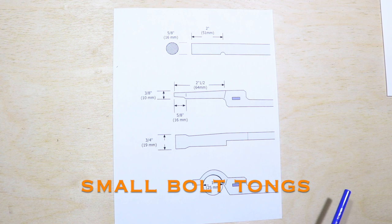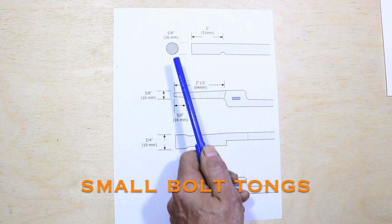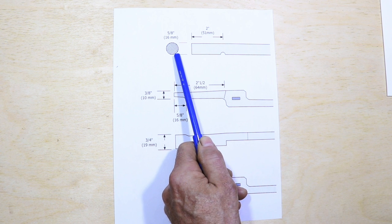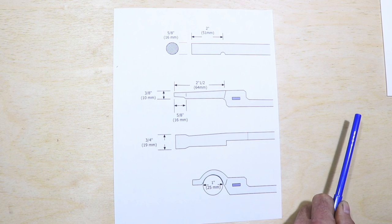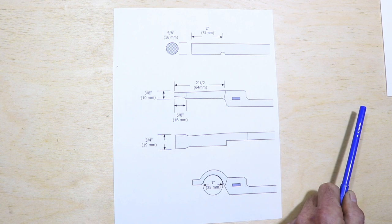I also make a smaller version of bolt tongs, and for this I use 5/8" round bar instead of 5/8" square bar. I start out with a two inch offset, but beyond that the process is exactly the same.